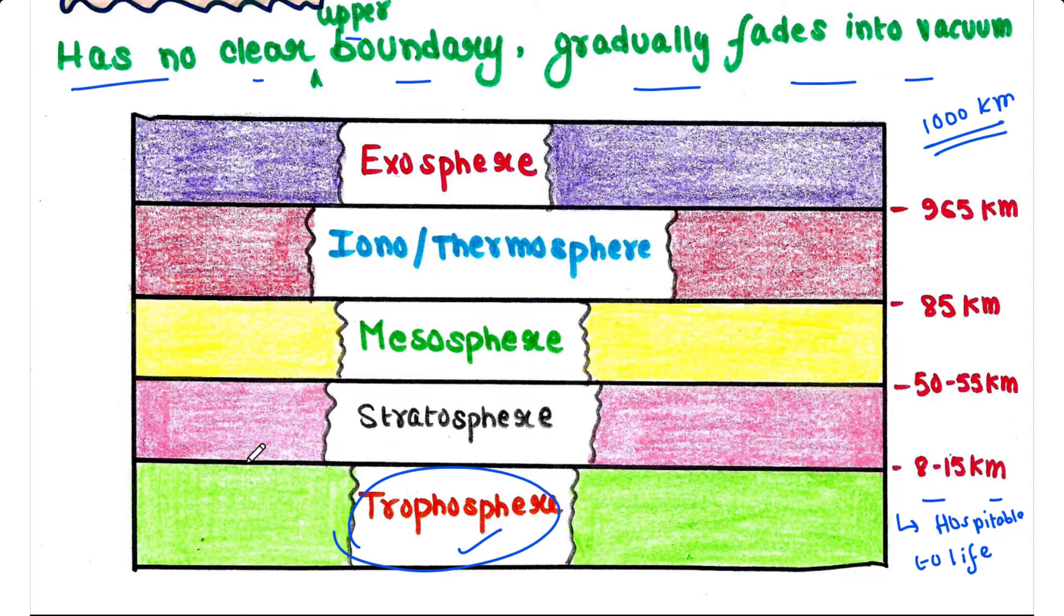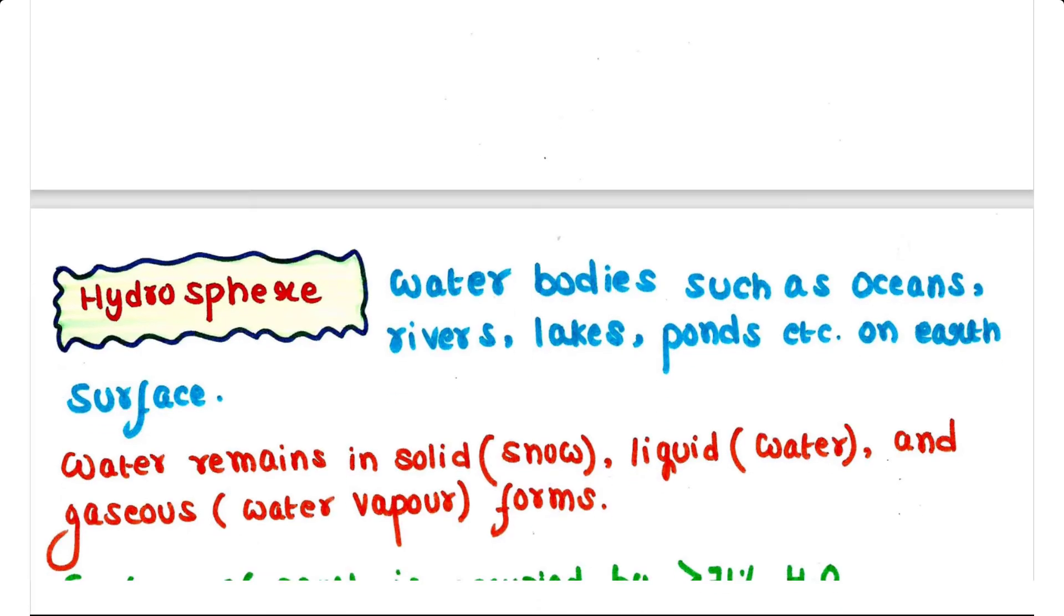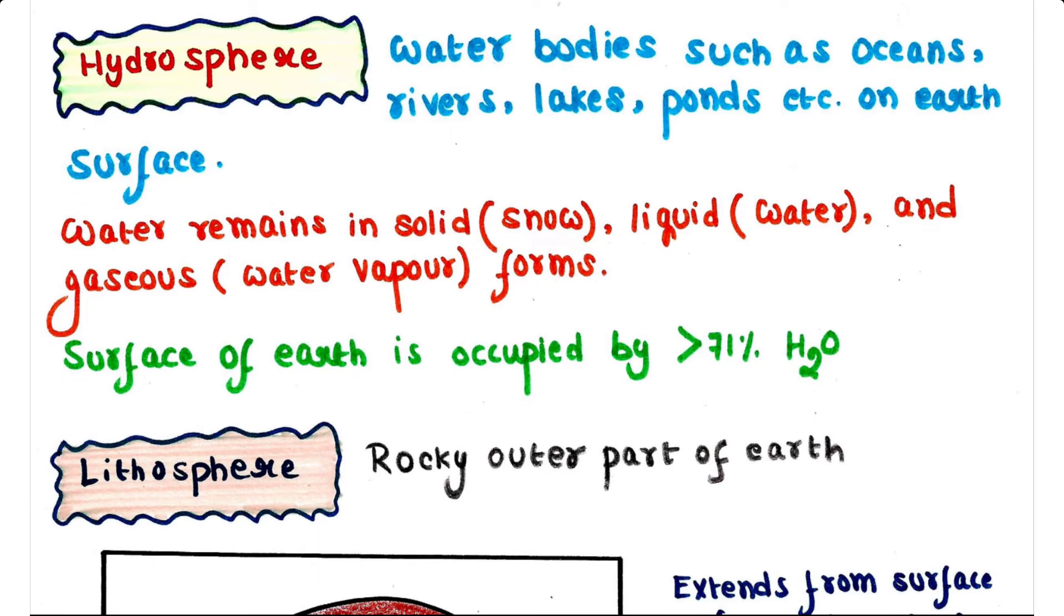Other than troposphere, in these four layers life cannot exist. Next is hydrosphere. Hydrosphere refers to the water bodies such as oceans, rivers, lakes, ponds, etc. on earth surface. Water remains in solid form, that is snow; liquid form, that is water; and gaseous form, that is water vapor. The surface of the earth is occupied by more than 71 percent water where majority of life exists.